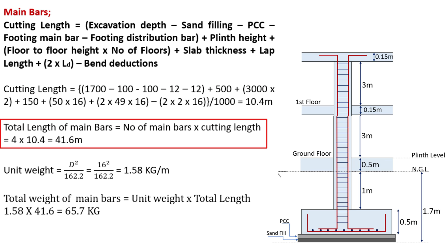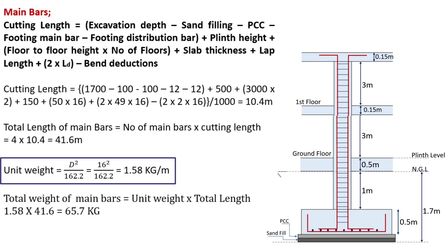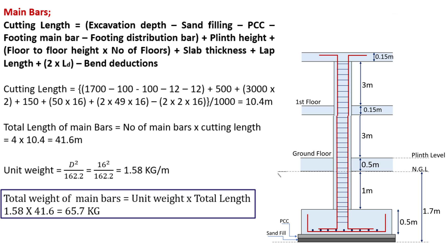The total length of main bars equals number of main bars multiplied by cutting length. Number of main bars is 4 and cutting length is 10.4 m, giving a total length of 41.6 m. The unit weight is given by D² / 162.2, where D is 16 mm, which gives 1.58 kg per meter. The total weight of main bars equals unit weight × total length — that is 1.58 × 41.6 = 65.7 kg.